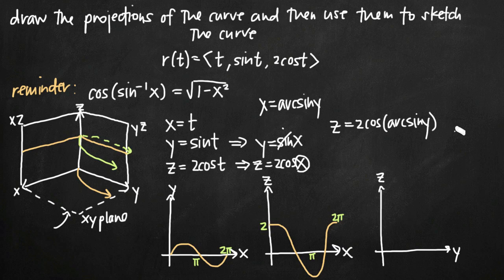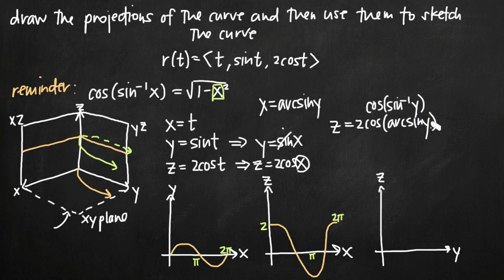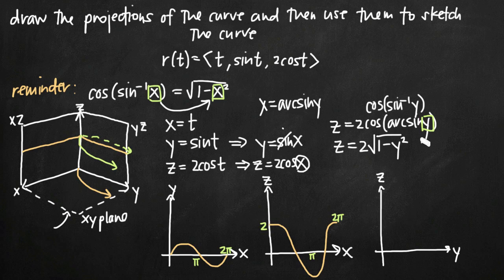Here's where our trigonometry comes into play. We have cosine of arcsine — sometimes written cosine of sine to the negative 1 of y. Using the trigonometry of a right triangle, there's a formula: cosine of the inverse sine function gives the square root of 1 minus x squared. In our case, y is inside the arcsine function, so cosine of arcsine of y simplifies to the square root of 1 minus y squared. Therefore z equals 2 times the square root of 1 minus y squared.